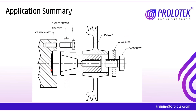Now let us take a case study. There are a few parts that get assembled together. The base part is a crankshaft, onto which an adapter is assembled. On the adapter, we assemble a pulley with a washer and a bolt. For this TTFT case study, we will focus on only two parts: the crankshaft and the adapter.